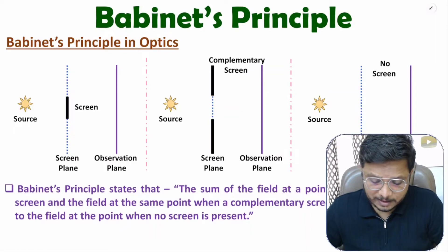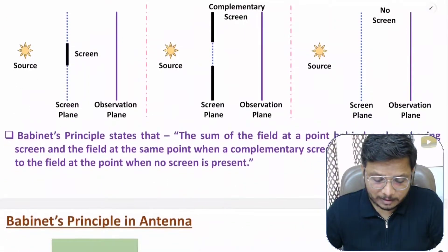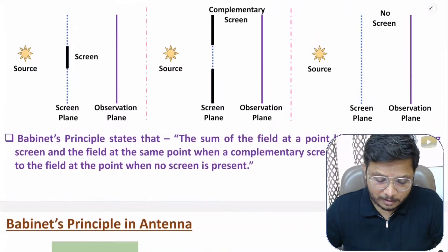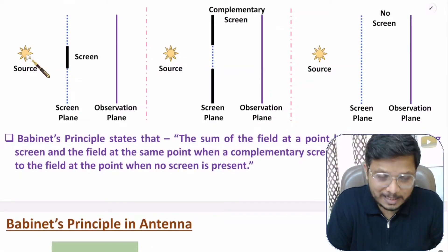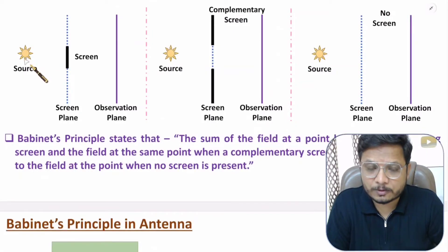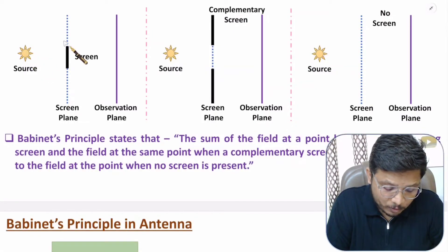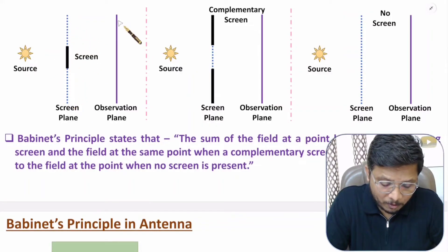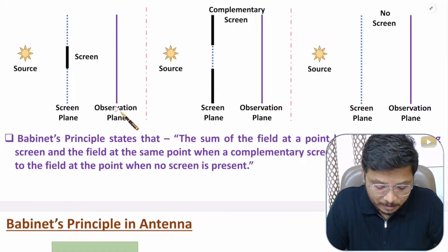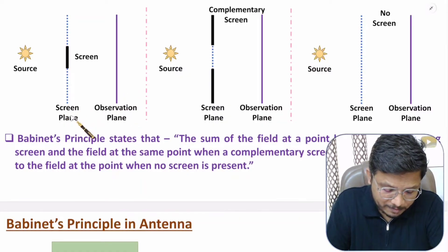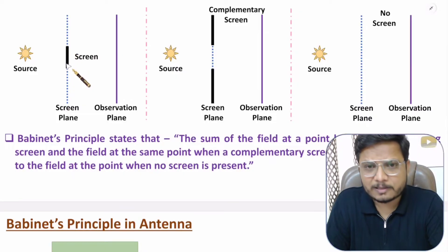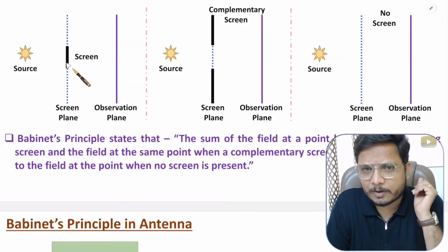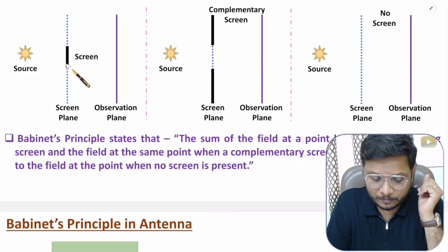There are a few interesting observations you need to understand. Here we have a light source that will be radiating light. Here we have a screen plane and here we have an observation plane. On the screen plane we will be placing a screen — an obstacle.